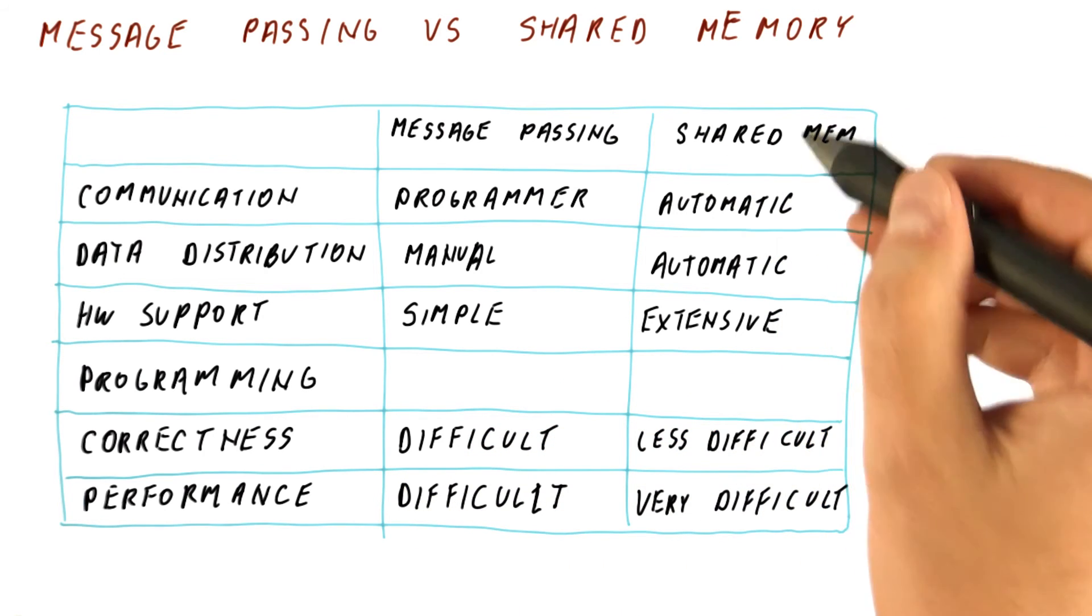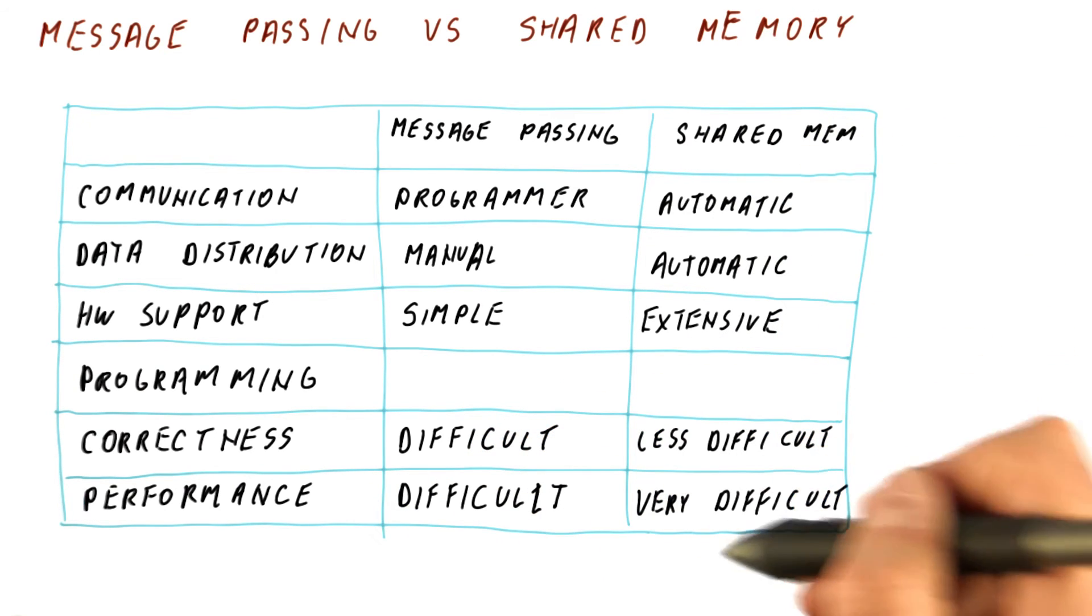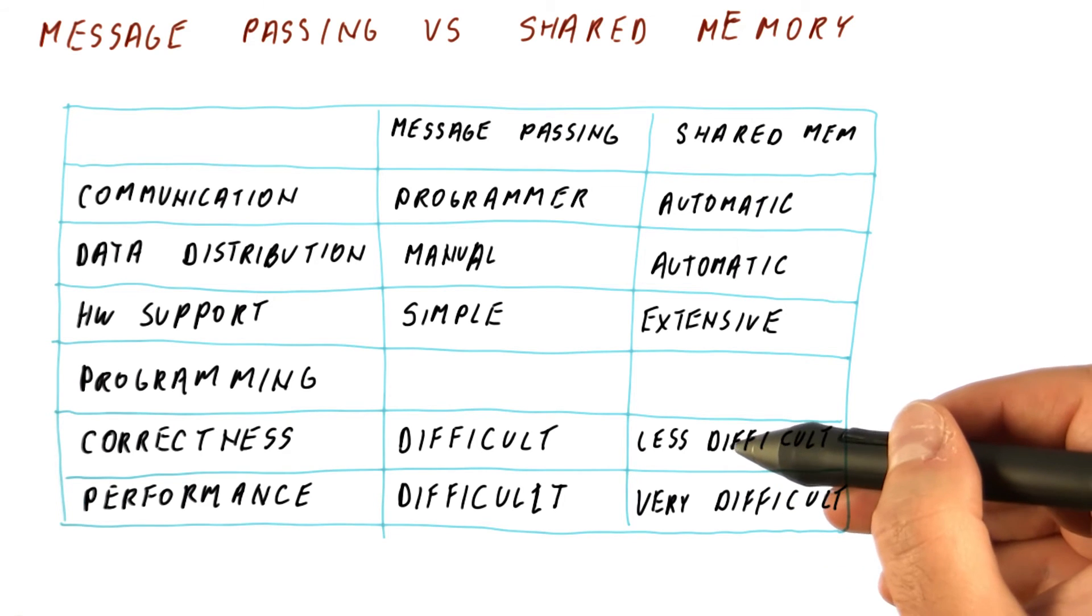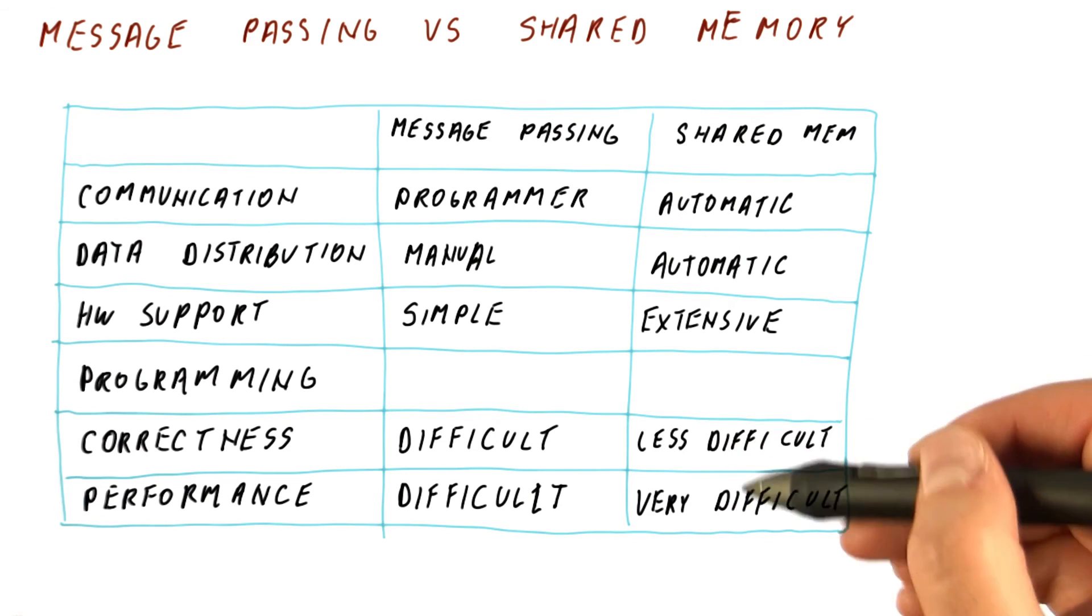In contrast, shared memory, performance is very difficult to get. And the difference between correctness and performance can be large.